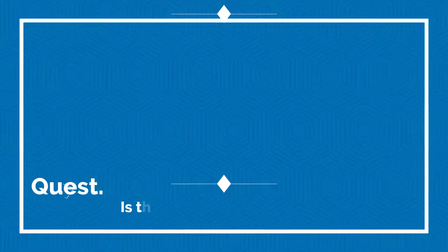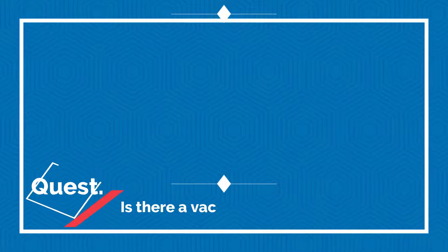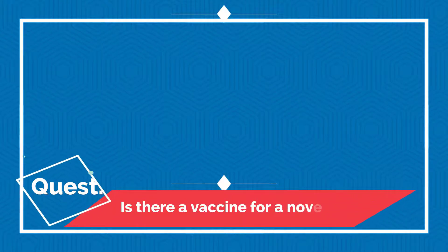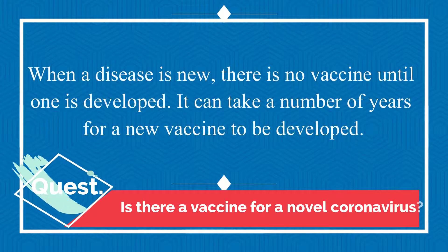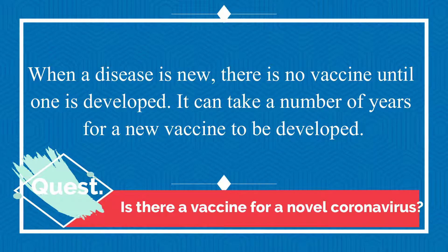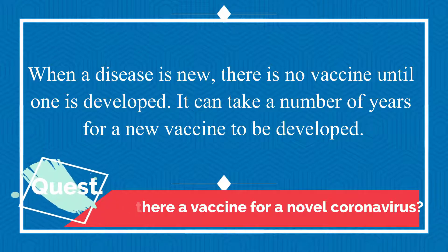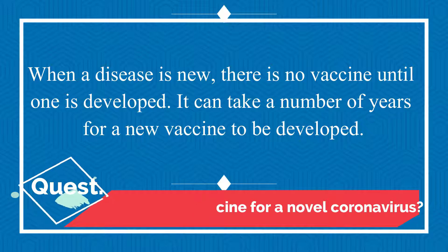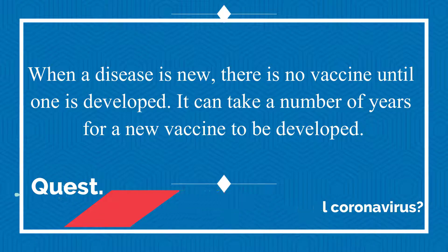Is there a vaccine for novel coronavirus? Is virus ke liye abhi tak koi vaccine nahi hai — vaccines are still under development and may take a number of years. When a disease is new, there is no vaccine until one is developed, and developing a new vaccine can take a number of years.